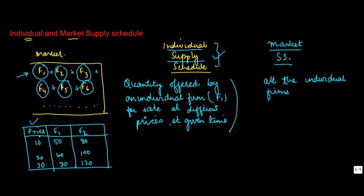When you draw an individual supply schedule, you take the price and the quantity of F1 or F2 as the case may be. But if the market comprised only F1 and F2, to draw the market schedule you take the sum of these two: 130, 160, 190. The quantity will be this, the price will be this, and when you draw the schedule you get the market supply schedule.